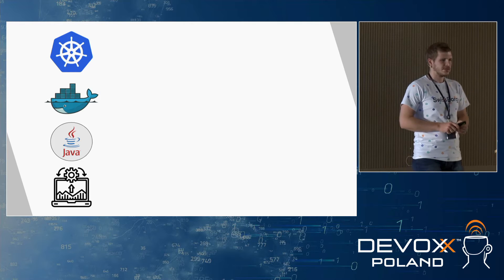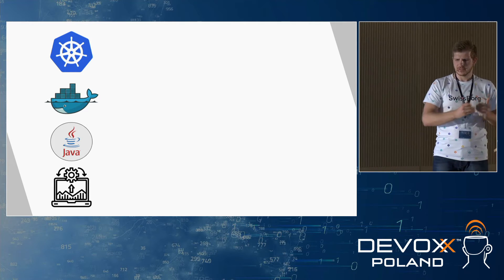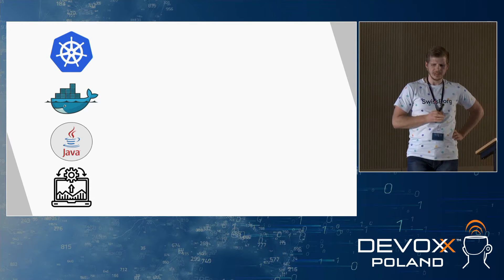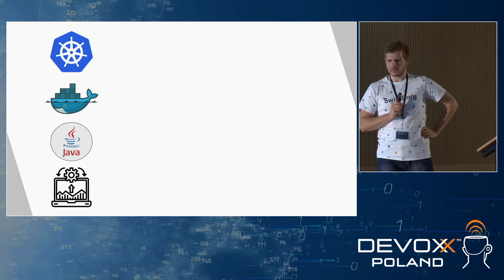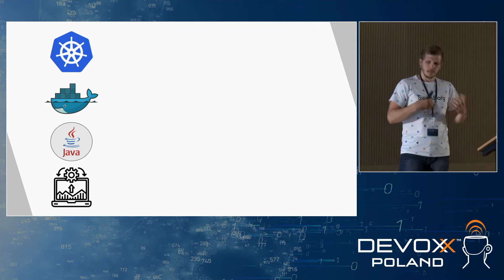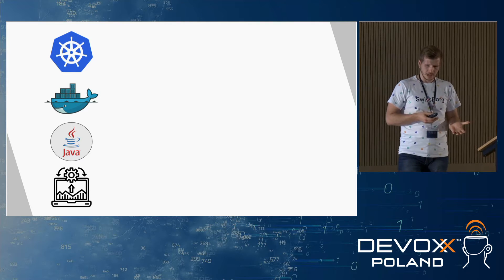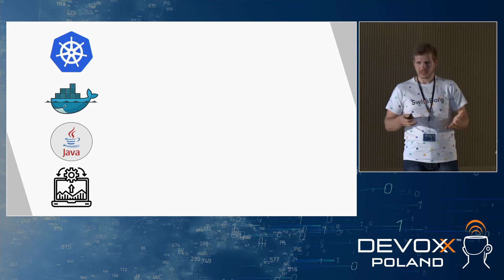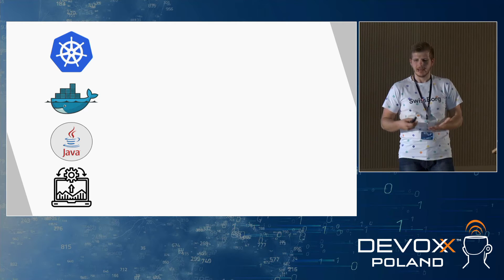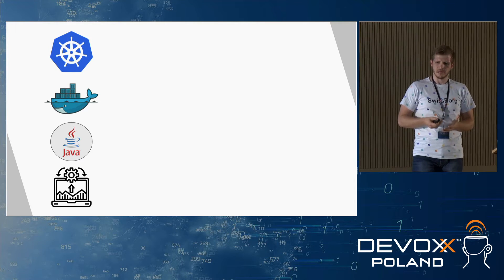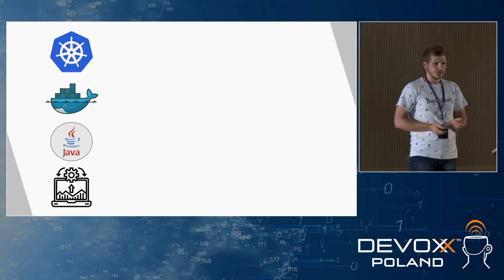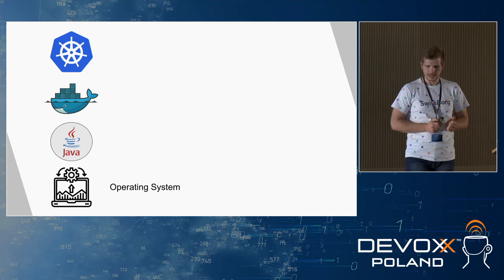We are going to cover this at different levels of abstraction. We'll start from the operating system and talk about some basic stuff — it's always good to refresh. Then we'll go to JVM specifics, look into some Docker implementation things, see how Docker works with JVM, and at the end cover things related to Kubernetes.